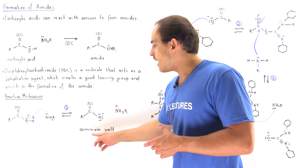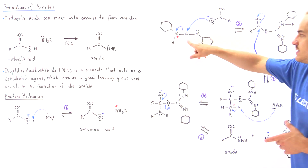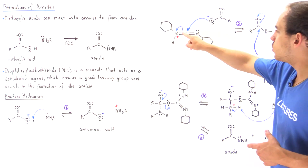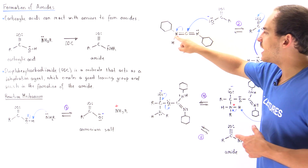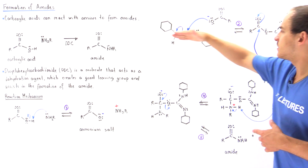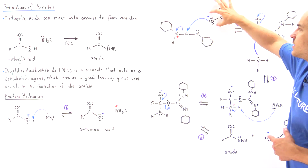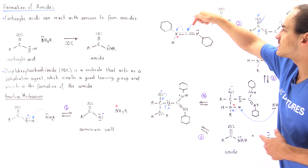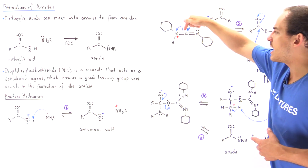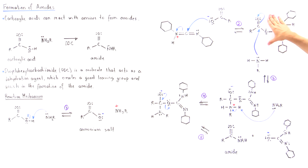This species can now act as a nucleophile and attack the DCC molecule. DCC looks something like this. Notice that this nitrogen is protonated to create a good enough Lewis acid. The nucleophile attacks this carbon, displacing the pi bond and placing it onto the nitrogen, forming an intermediate that now contains a very good leaving group.